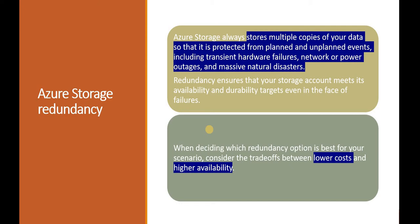Suppose you are accessing any XYZ website and some outage or failure occurs in the primary region — you do not feel any lag in the availability of data, because it immediately gets the data from the secondary region based on the type of storage account you have configured. When deciding the redundancy option, cost and availability are the main trade-off factors.